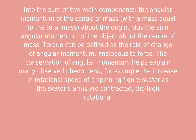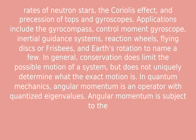For example, the increase in rotational speed of a spinning figure skater as the skater's arms are contracted, the high rotational rates of neutron stars, the Coriolis effect, and precession of tops and gyroscopes.